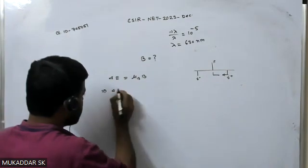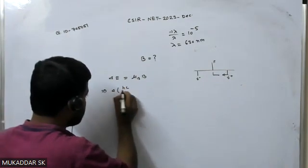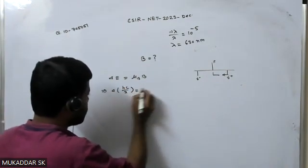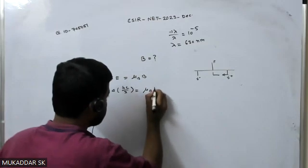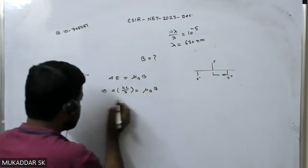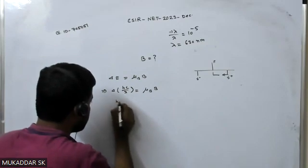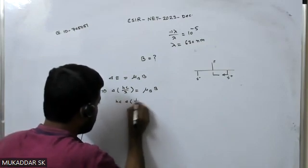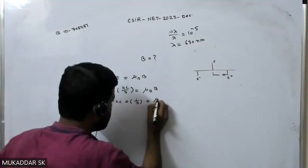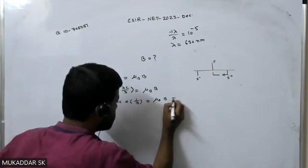Now if you see from here that E is nothing but hc by lambda, that is equals to mu_B B. So from here, hc is common, so you can see that hc then delta 1 by lambda that will be mu_B B, which implies...